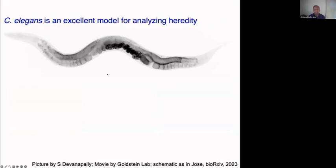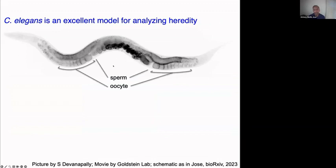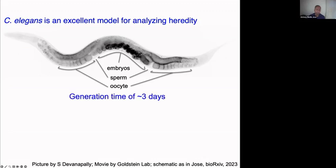To start thinking about this, we need a really simple organism. The one-millimeter-long nematode C. elegans is perfect. Most of the time it's a hermaphrodite; it can also be male. In hermaphrodites, oocytes are made in an assembly line, get fertilized by sperm, and become embryos held in utero before being laid. The time from adult to adult progeny is just three days, and the worm is transparent, so we can put in fluorescent proteins and watch what happens.